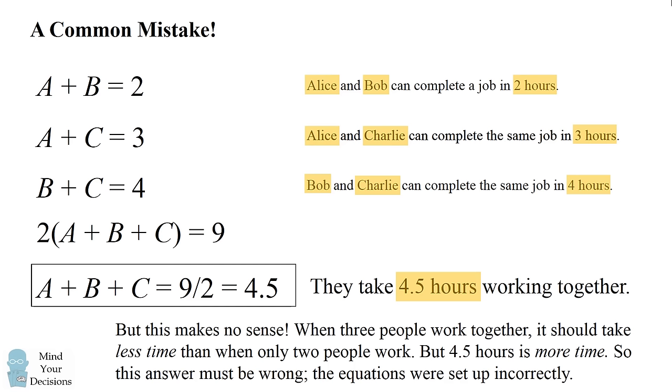Not only were the equations set up incorrectly, but any student who submits this answer is not thinking about whether the answer makes any logical sense. So how do we solve this problem? We need to set up the equations in the correct method. We know that Alice and Bob can complete a job in two hours. So how do we translate this into an equation?